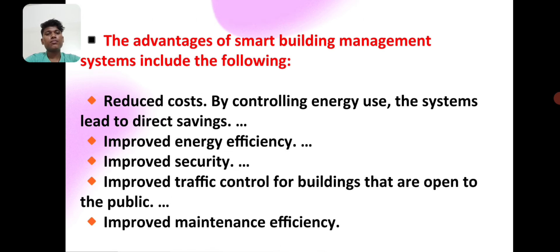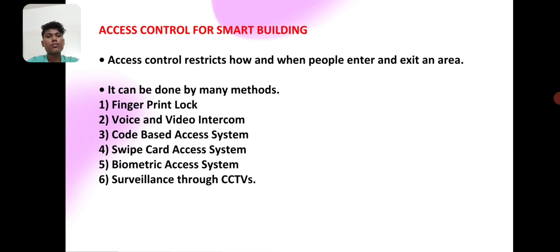The advantages of a smart building management system include the following: reduced cost by controlling energy use, the system leads to direct savings, improved energy efficiency, improved security, improved traffic control for buildings open to the public, improved maintenance efficiency, and access control for smart buildings — that is, how and when people enter the existing area.